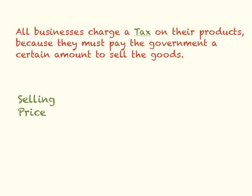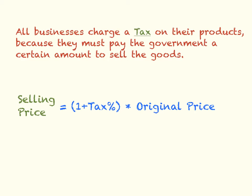All businesses charge a tax on their products. They do this because they must pay the government a certain amount to sell the goods to you. The formula for selling price taking into account tax is: selling price equals 1 plus the tax percentage, written as a decimal, times the original price. This is very similar — actually exactly like markup. It's just that the tax percentage is usually smaller, but it's the same equation.